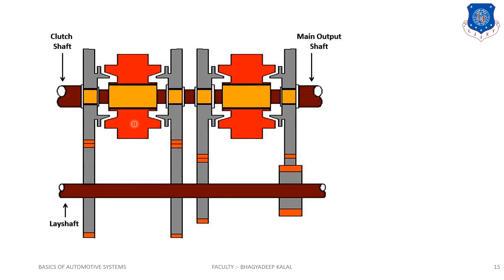Let me understand this diagram clearly. These are known as the synchromesh — instead of the dog clutch. These are our gears. The clutch shaft is here, this is the clutch gear, and this is the lay shaft over which each gear is constantly meshed. This is the advancement or modification of the constant mesh gearbox. The main shaft layout is constantly meshed with the corresponding gear on the lay shaft. The gears on the lay shaft are fixed while those on the main shaft are free to rotate.